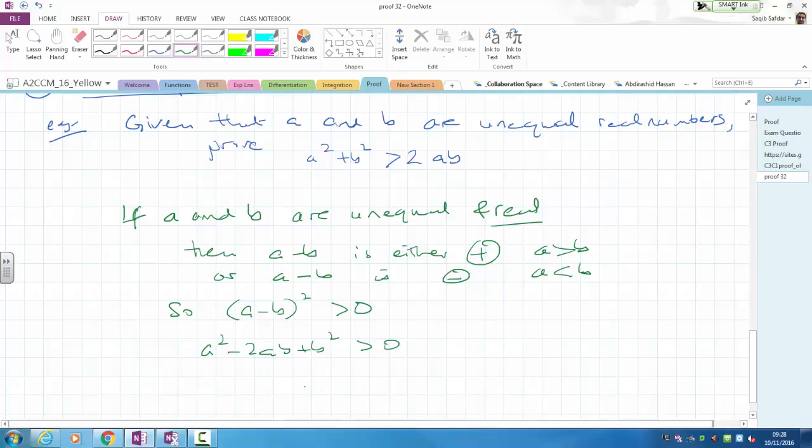Now we can take the 2ab to the other side. We've got a squared plus b squared is greater than 2ab. And so whether a is greater than b or a is less than b, when you square them, you get a positive number. And therefore, you'll have this condition. Therefore, we've shown that this is always going to be true.